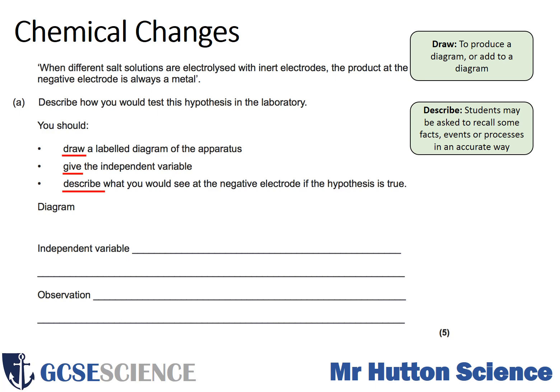What are those things called that go into the solution to allow electricity to flow around the circuit? Remember, the independent variable is the thing that you change — so what is the thing you'd alter each time? And for the observation, it's what you see — specifically at the negative electrode. Pause the video now and attempt the question.